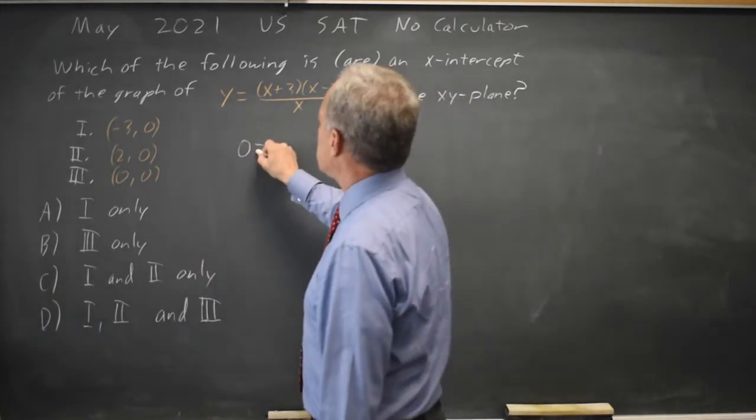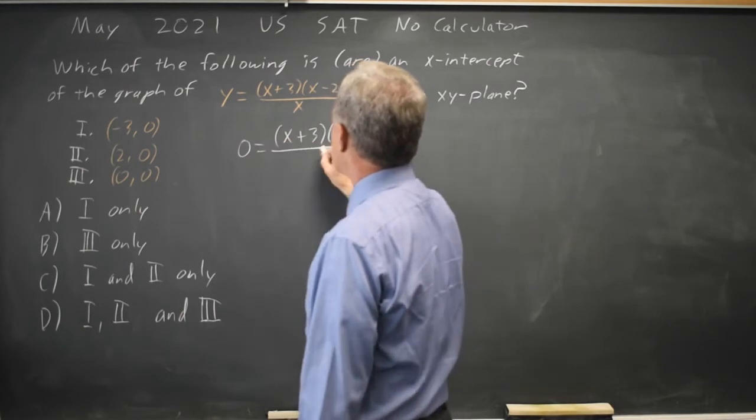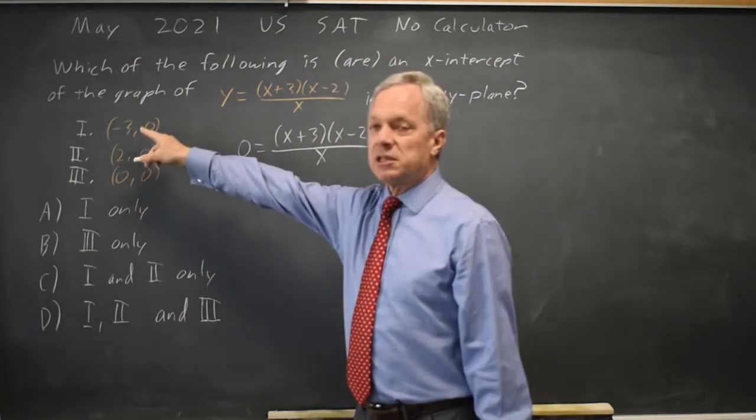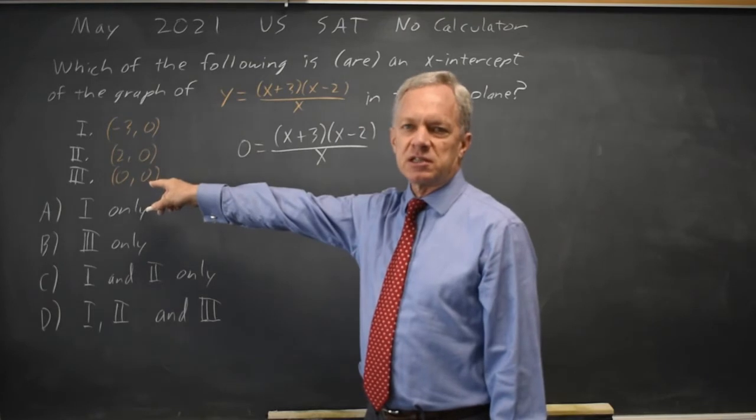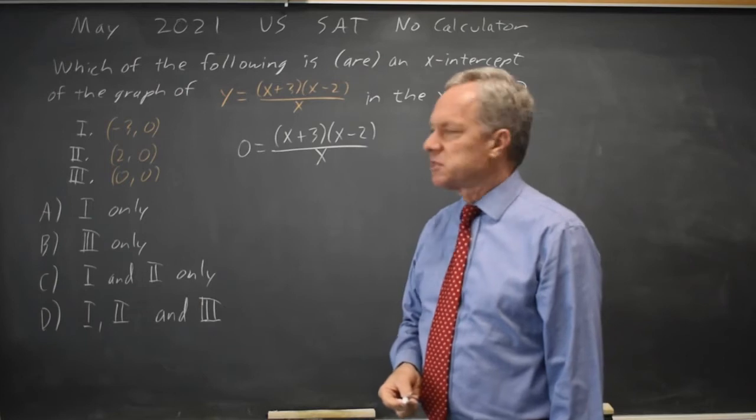So I have 0 equals (x+3)(x-2)/x. I can either plug in these x-values and see if I get 0, or I can set this expression equal to 0 and solve for the x-values where it's 0.